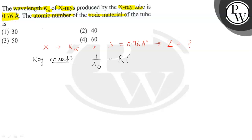Then within bracket 1 upon the final quantum number square - it means ground state 1 - minus the initial transition from second orbit. So the final quantum number is 1 and the initial quantum number is 2. This is the key concept.